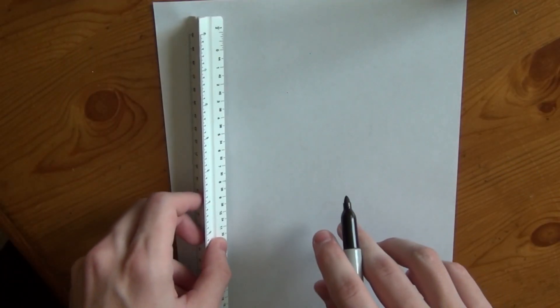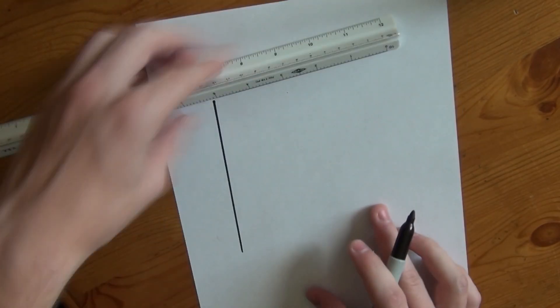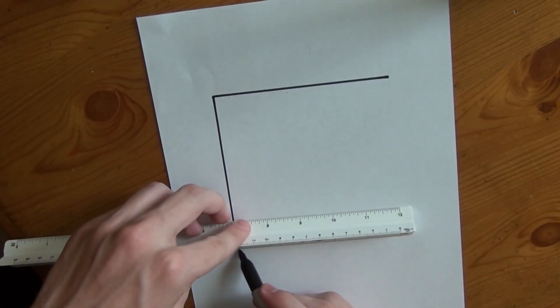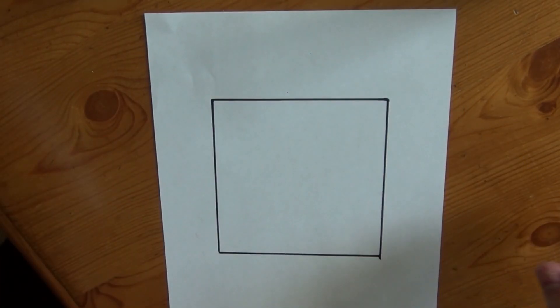First you want to draw a square in the middle of your page, like so. Then you want to draw a smaller square inside this square.